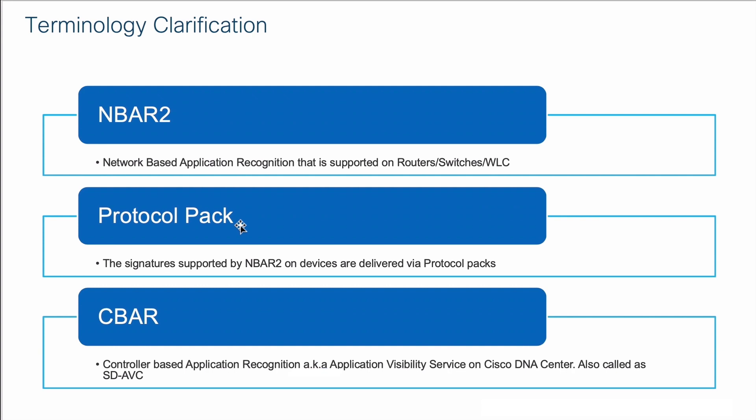We're taking this one step further by using something called CBAR — Controller-Based App Recognition. This is another name for Application Visibility Service. There is now a container on Cisco DNA Center that learns about all the applications on your network, improves classification for unknown and custom applications, and enhances signatures for cloud applications that constantly change. Since this is done from the DNAC controller, we call it Controller-Based App Recognition, but it's the same as Software-Defined AVC or Application Visibility Service.